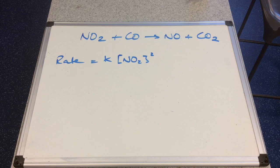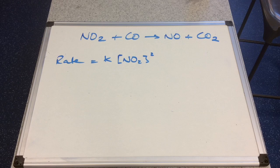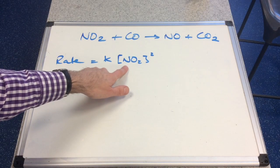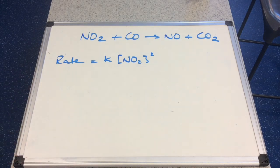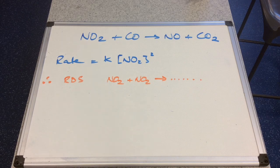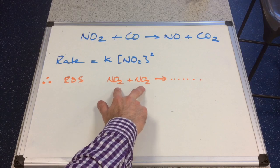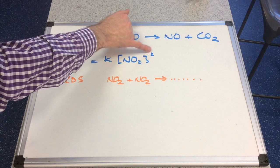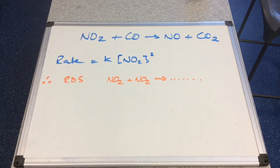Let's apply this to an actual reaction: NO₂ + CO → NO + CO₂. The rate equation has been determined experimentally — possibly by the initial rates method — as: rate = k[NO₂]². This means the rate determining step involves two molecules of NO₂ reacting with each other, because of the second order with respect to NO₂, and CO doesn't feature in the rate equation at all.